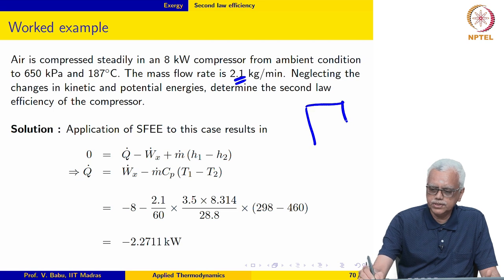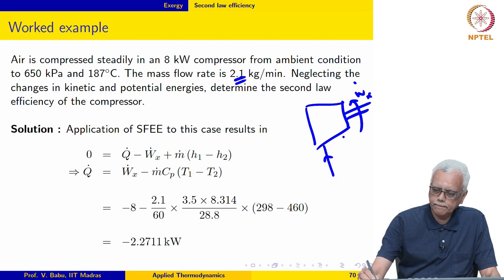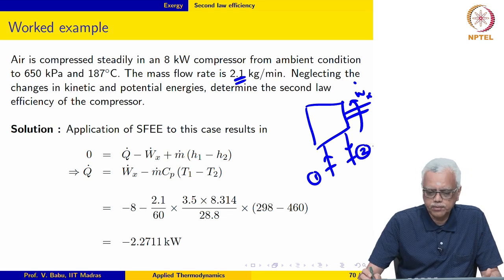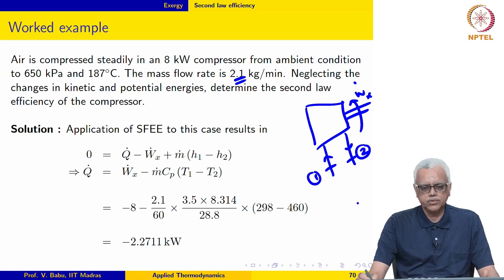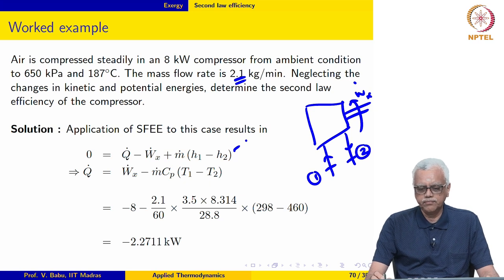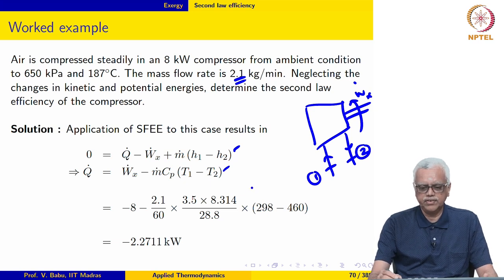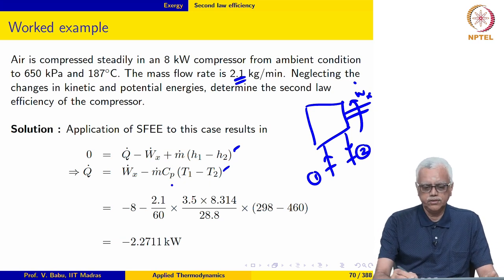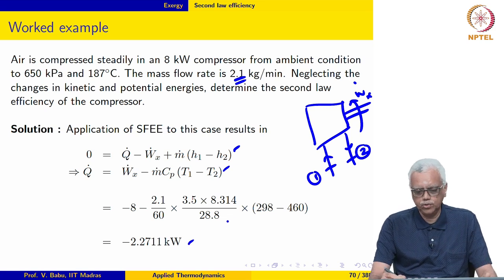We have a compressor where air enters at ambient condition and is compressed to 650 kPa and 187 degrees Celsius. We apply the steady flow energy equation to the compressor and make use of the fact that air is an ideal gas and calorically perfect. We write H1 minus H2 as Cp times T1 minus T2. Plugging in the numbers, we get Q dot to be minus 2.2711 kilowatts.